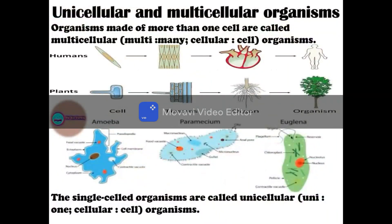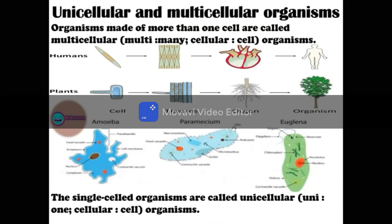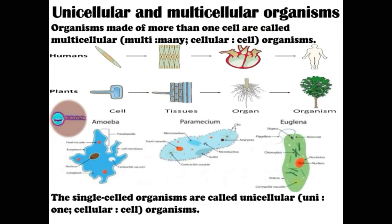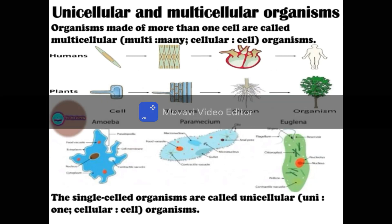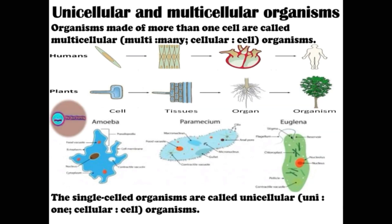On the basis of number of cells, organisms are divided into two categories: unicellular and multicellular. 'Uni' means single or one, and 'cellular' means cells. Examples of unicellular organisms are amoeba, paramecium, and euglena. 'Multi' means many — we humans, plants, and animals are multicellular organisms. They vary in shape and sizes.